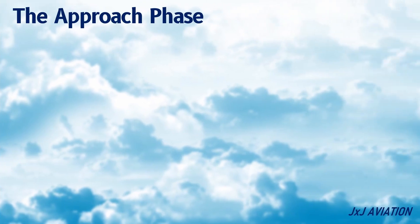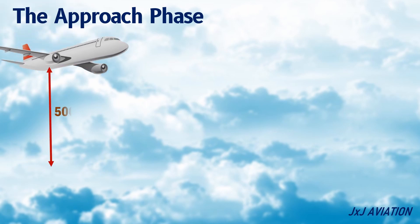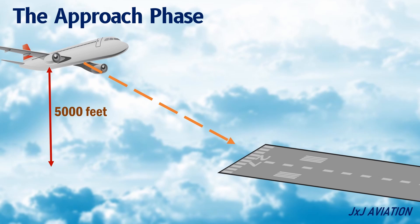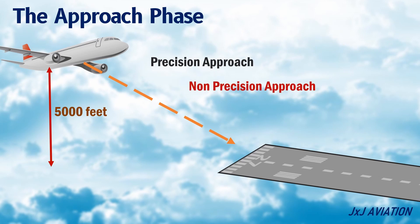What is the Approach Phase? The Approach Phase of an aircraft starts when an aircraft descends below 5000 feet. Here, the aircraft will align and descend gradually towards the runway. The Approach Phase ends when the aircraft reaches the runway threshold. There are different types of approaches: Precision Approach, Non-Precision Approach, and Visual Approach.